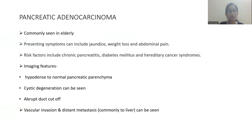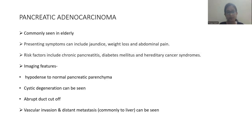Pancreatic adenocarcinoma is commonly seen in the elderly, with presenting symptoms including jaundice, weight loss, and abdominal pain. Risk factors include chronic pancreatitis, diabetes mellitus, and hereditary cancer syndrome. Imaging features include a hypodense mass relative to normal pancreatic parenchyma, cystic degeneration, abrupt pancreatic duct cutoff, vascular invasion, and distant metastasis commonly to the liver. Management: if resectable, Whipple surgery is performed for head lesions; for body and tail lesions, distal pancreatectomy is performed.